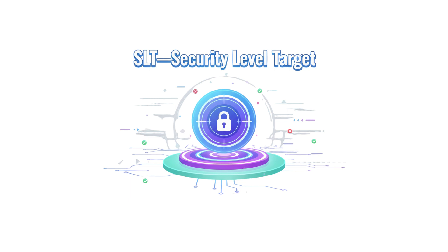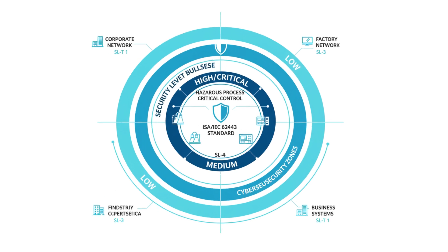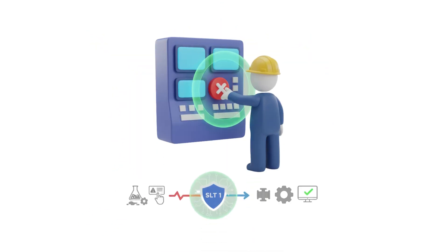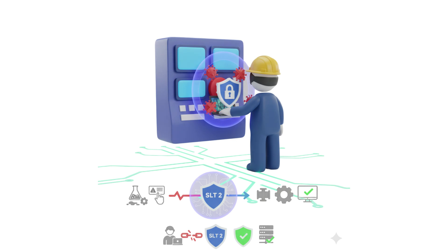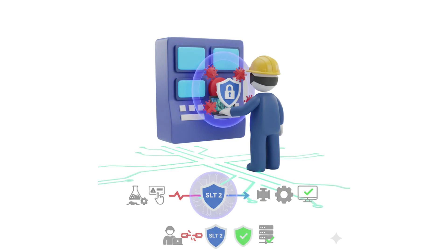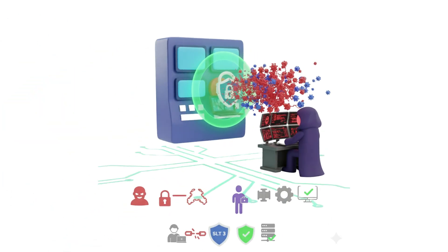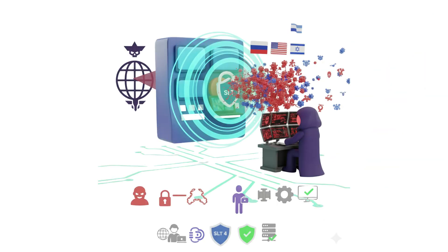One of the most important concepts in IEC 62443 is SLT — Security Level Target — a measure of how secure a system needs to be. There are four levels: SLT 1 protects against accidental or casual violations, such as preventing operator mistakes. SLT 2 defends against intentional but low-skilled attacks, such as blocking basic malware or phishing. SLT 3 provides resilience to sophisticated planned cyber attacks, such as ransomware or insider threats. SLT 4 is the highest security level, safeguarding against advanced persistent threats (APTs), such as nation-state cyber espionage.